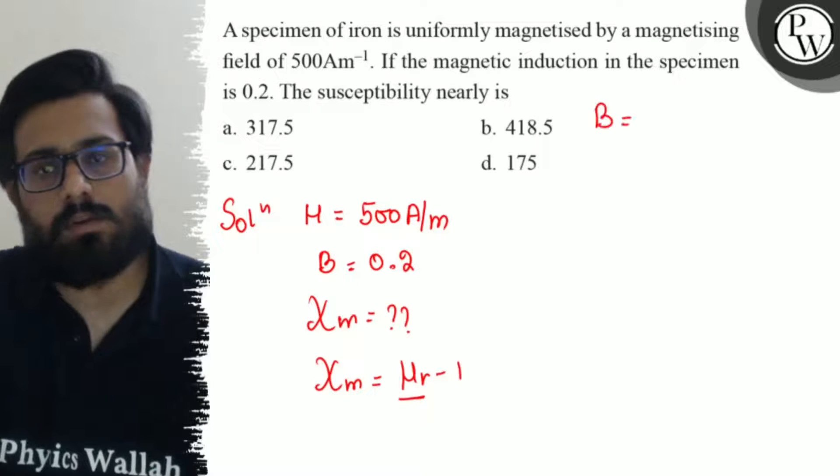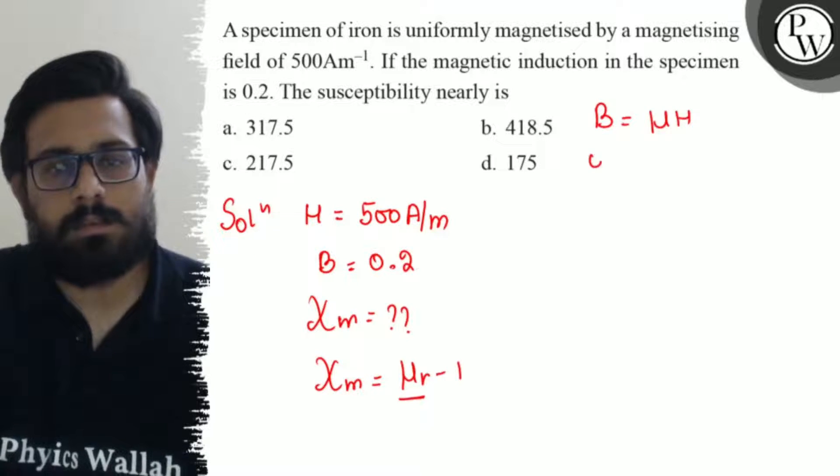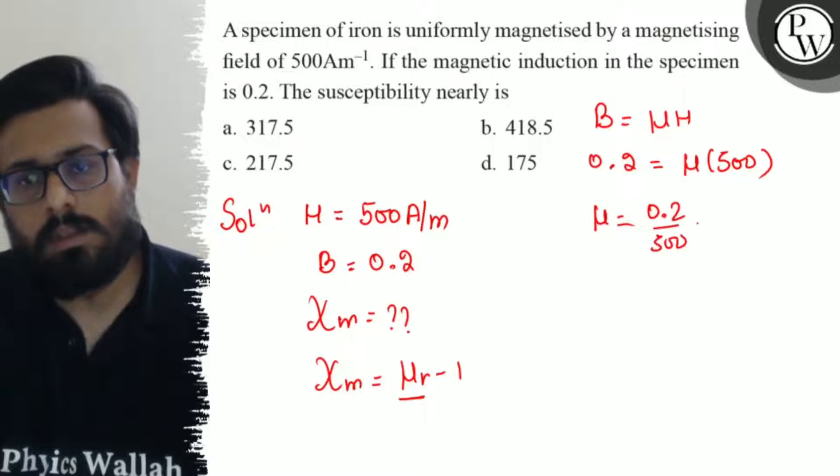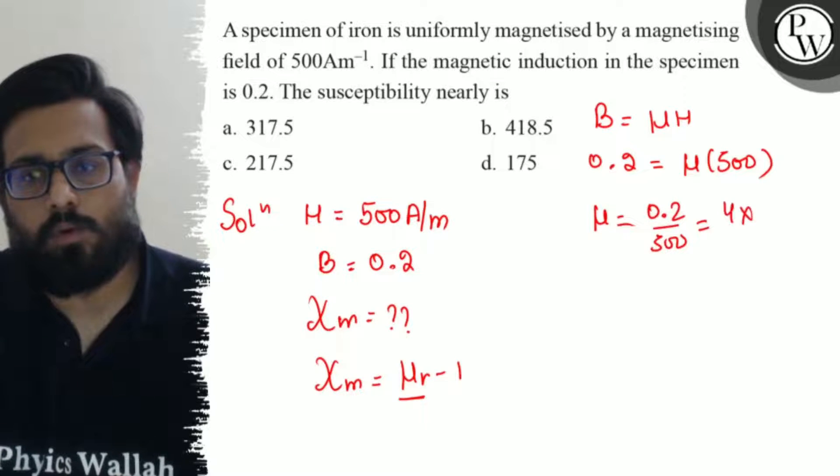From the relation B = μH, we have 0.2 = μ × 500. So μ = 0.2/500, which gives μ = 4 × 10^-4.